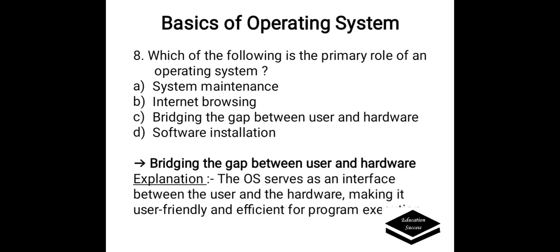Which of the following is the primary role of an operating system? Options are A. System maintenance, B. Internet browsing, C. Bridging the gap between user and hardware. The operating system serves as an interface between the user and the hardware, making it user-friendly and efficient for program execution.